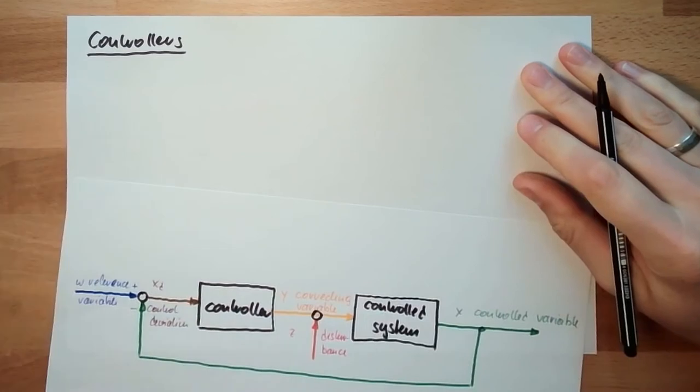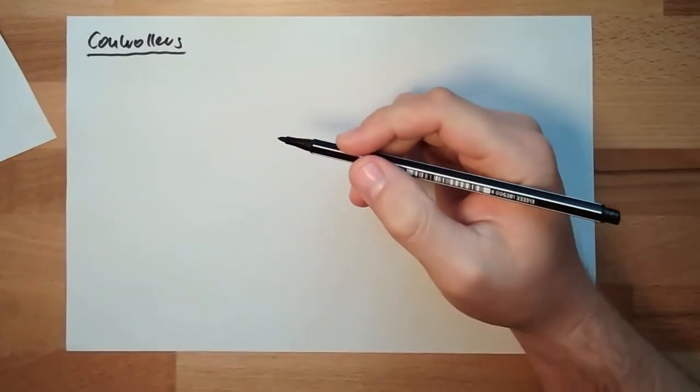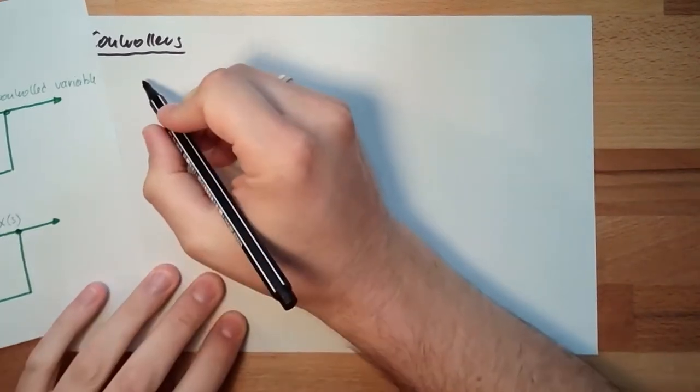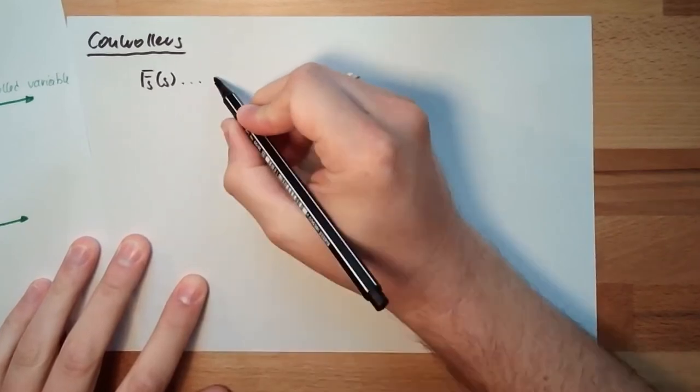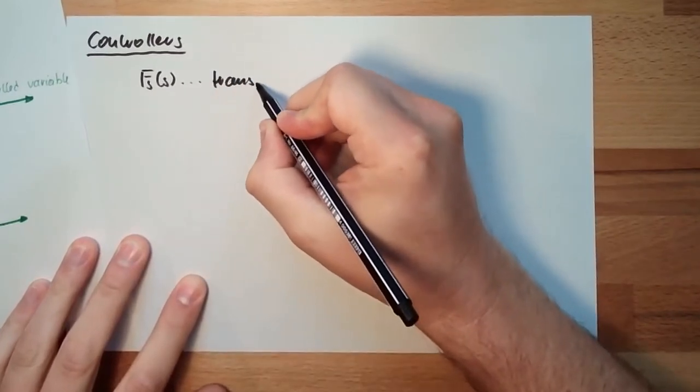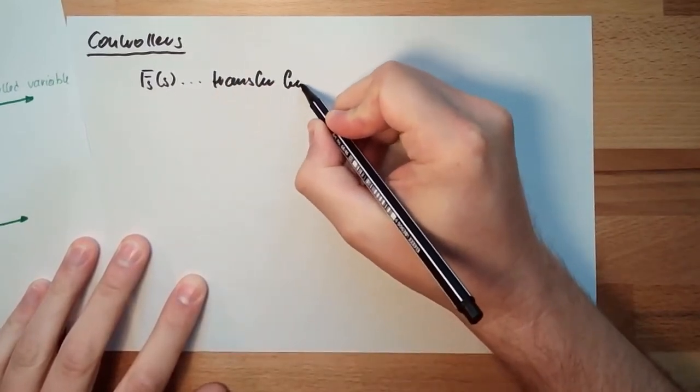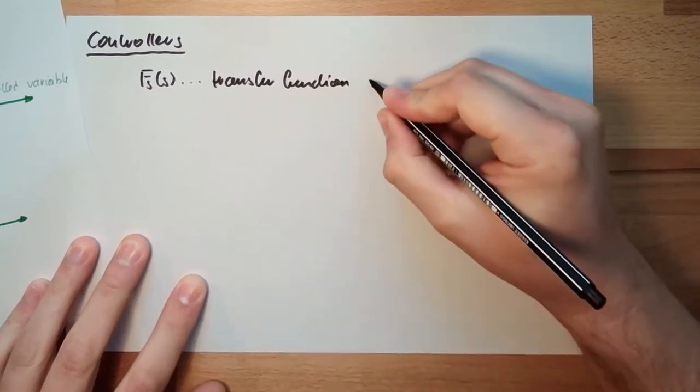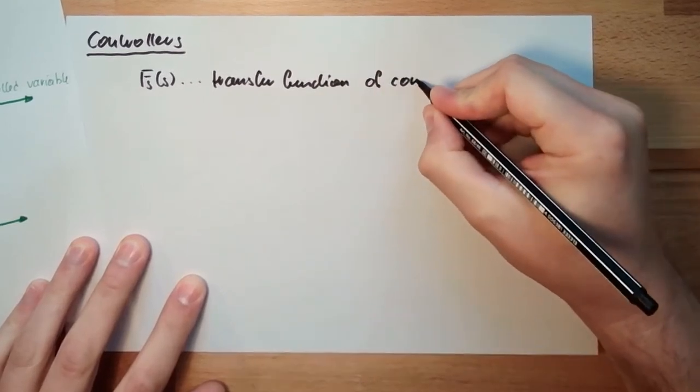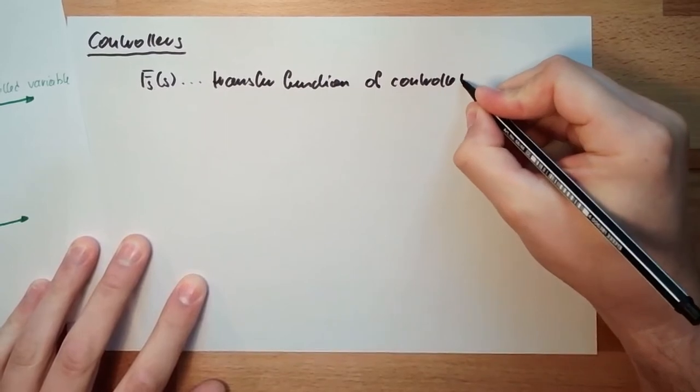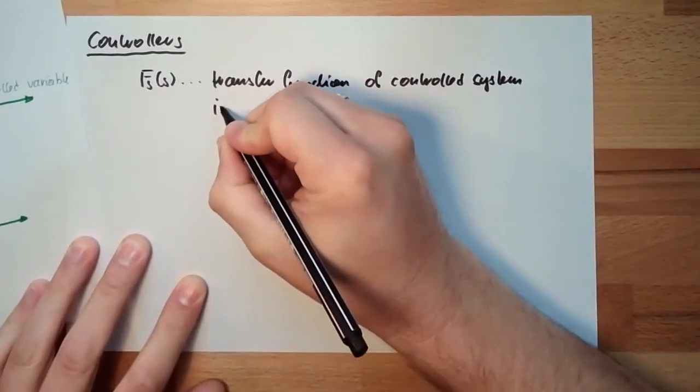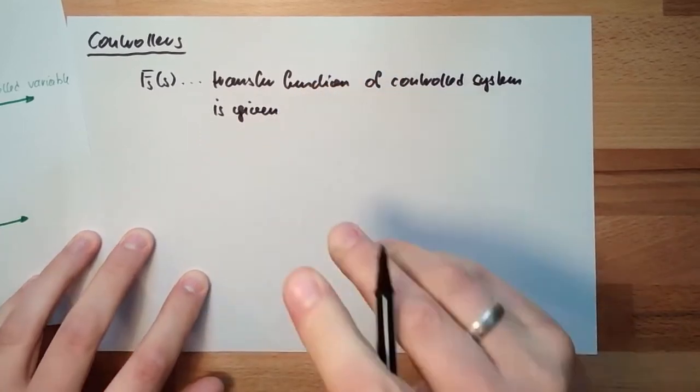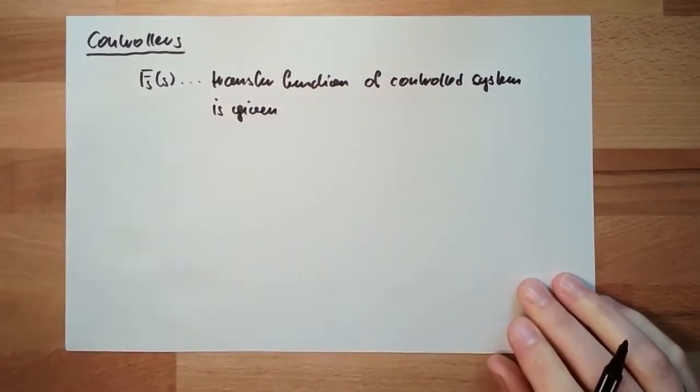Basically we do have two types of controllers. I mean one thing is clear. Fs(s), transfer function of the system of control system, is given simply. We cannot change this, or rarely. We can change this only rarely.